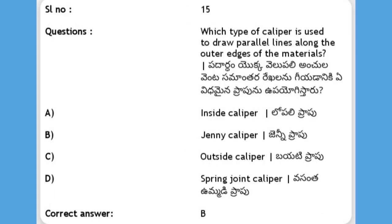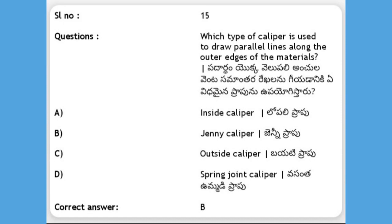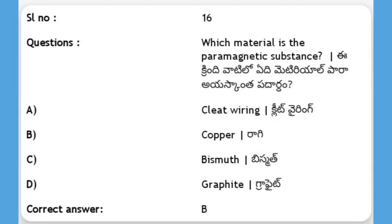Next, which type of caliper is used to draw parallel lines along the outer edges of material? The answer is B. Next, which material is the paramagnetic substance? The answer is B, copper. Copper is the paramagnetic substance.